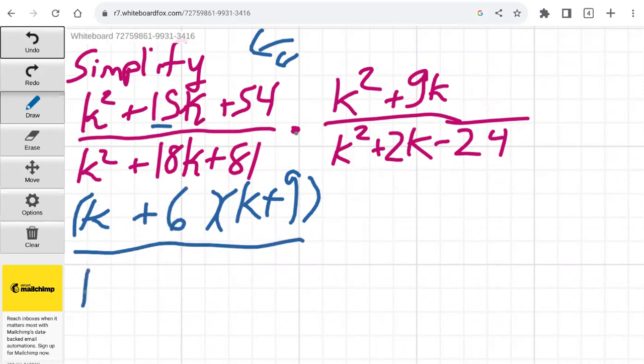For the denominator, we're going to set up the same thing. Now we need to think of two factors of plus 81 that, when added together, gets you positive 18. Well, 9 times 9 is 81, and 9 plus 9 is 18. So it looks like 9 and 9 are going to work there.